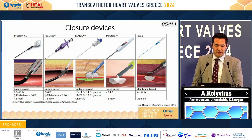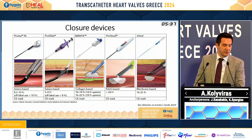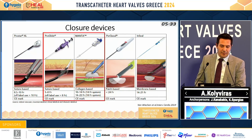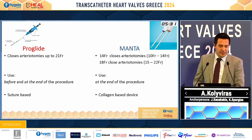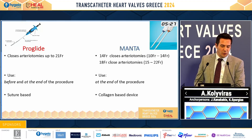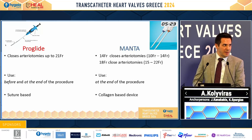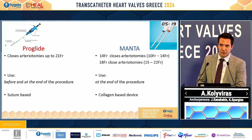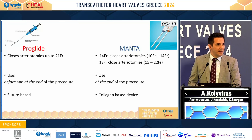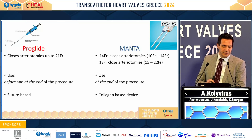Moving on to closure devices, there are different ways to achieve hemostasis to the vessel. We use ProGlide or Manta in daily practice. ProGlide can close arteriotomies up to 21 French, but we have to use it in two steps: at the beginning of the procedure to make the pre-close technique, and at the end to manage the sutures. This is a suture-based technique with ProGlide.